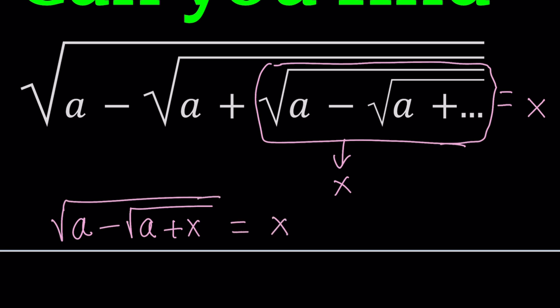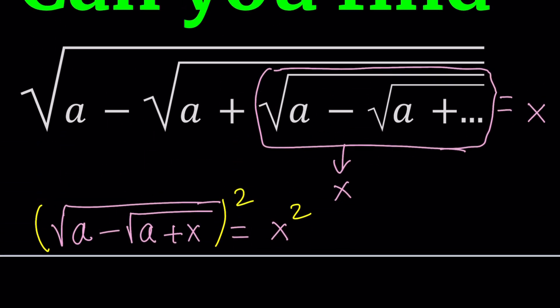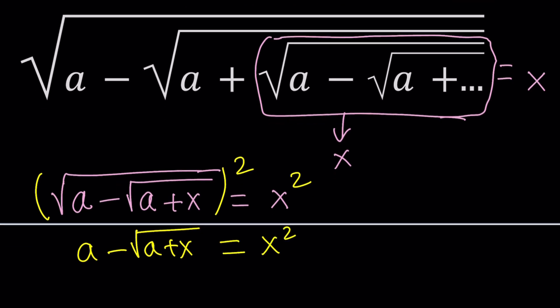We were able to set up a nicer radical equation — at least this one is finite. How do we solve it? By getting rid of all the radicals. There are two, so let's square both sides. When we square both sides we get a minus the square root of a plus x, equals x squared. We need to do a bit more, but before we dive deeper, I want to show you the result from WolframAlpha.